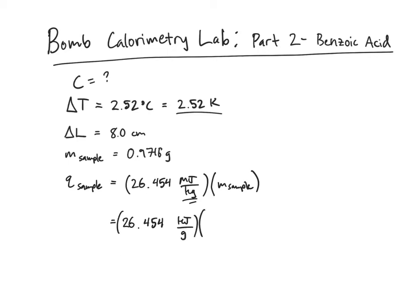Because the mass of my pellet is in grams, I don't want to have to deal in kilograms. So multiplied times the mass of my pellet, 0.9716 grams, and when I plug that into my calculator I get 25.703 kilojoules.